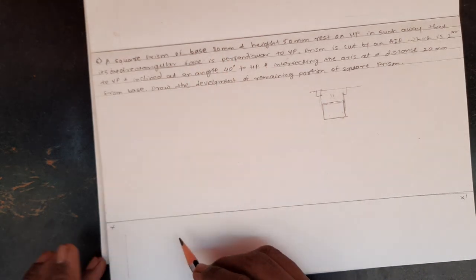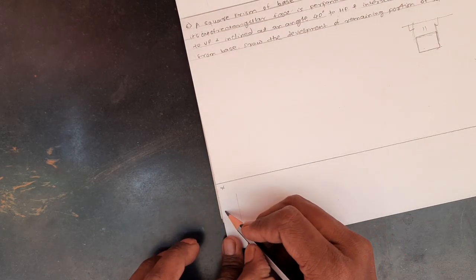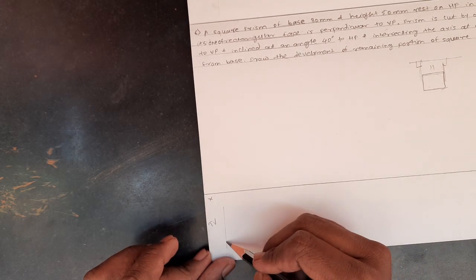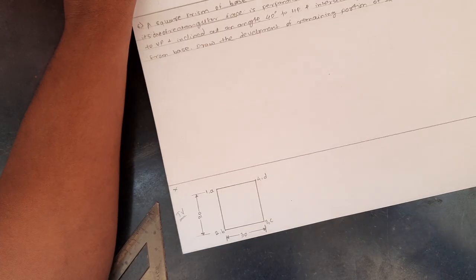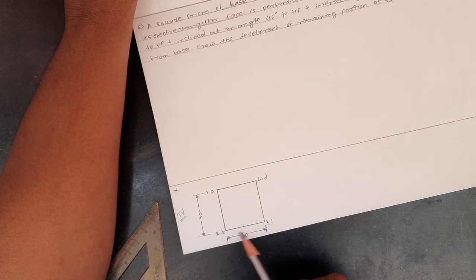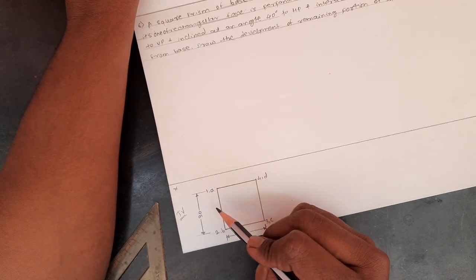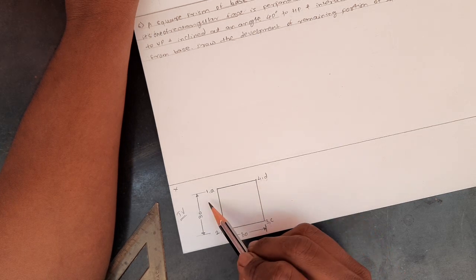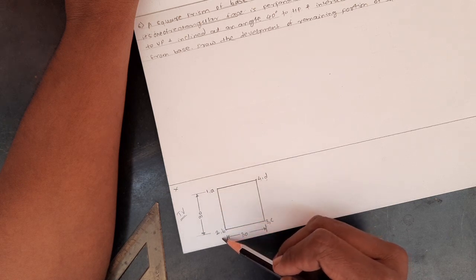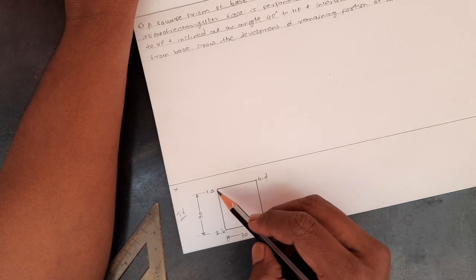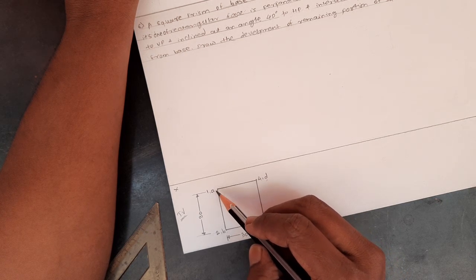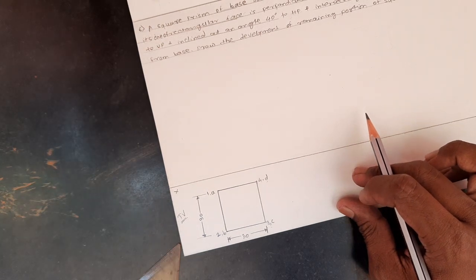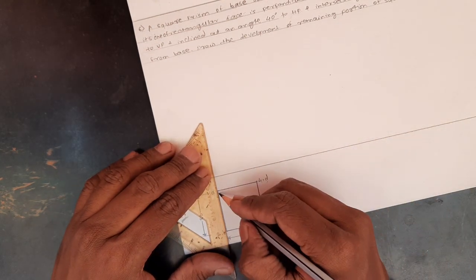We draw the square of side 30mm by 30mm in the top view with this orientation. The base corner notations are denoted by alphabets — a, b, c, and d — and the top corner notations are denoted by numbers — 1, 2, 3, and 4. Since it is the top view, the base edge and top edge coincide, so a coincides with 1, b with 2, c with 3, and d with 4.